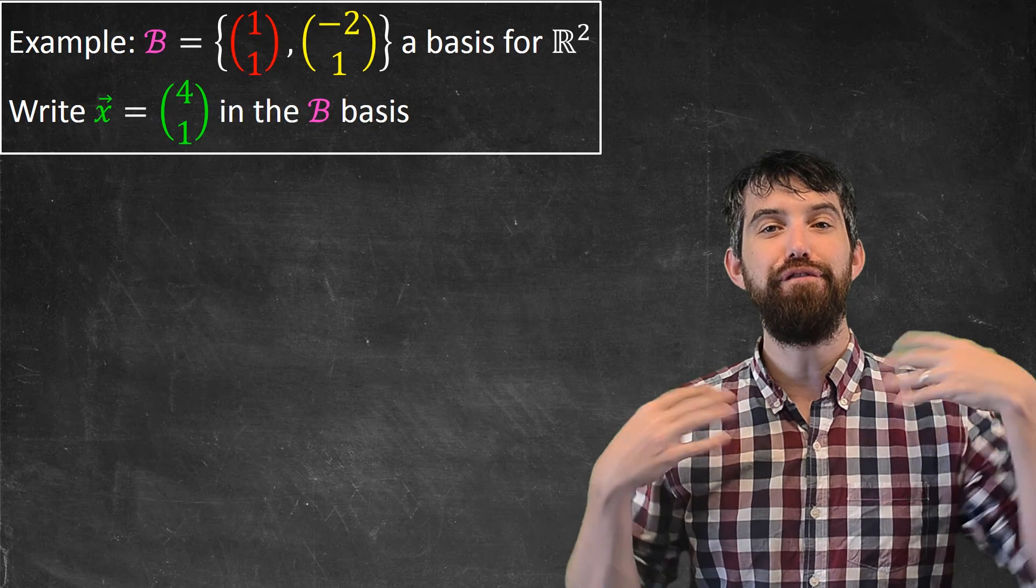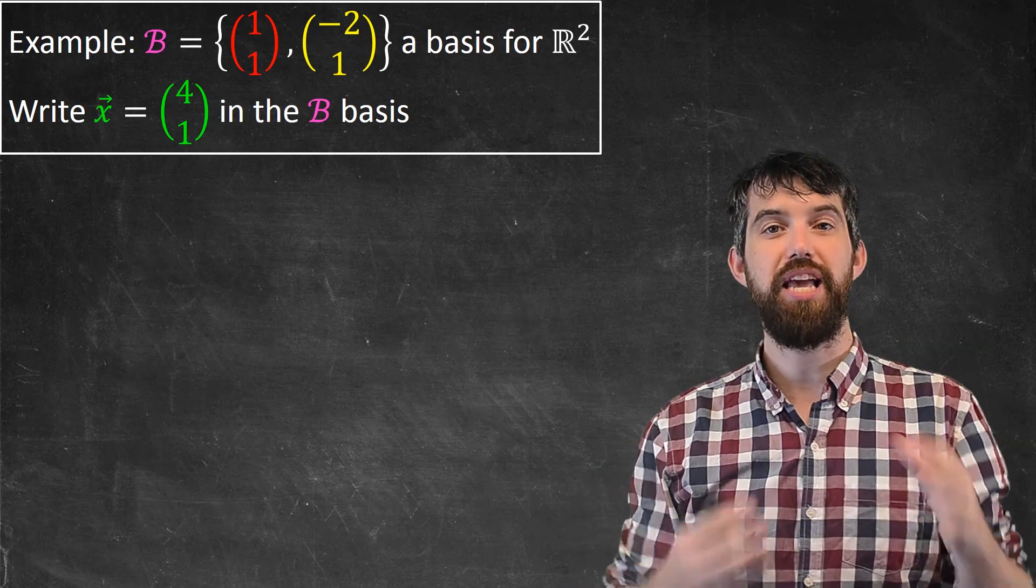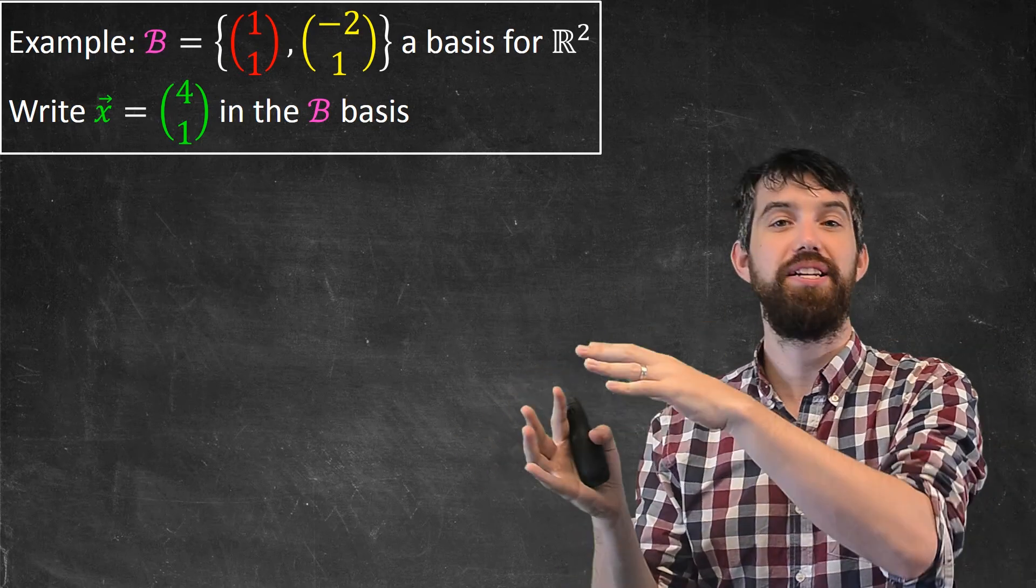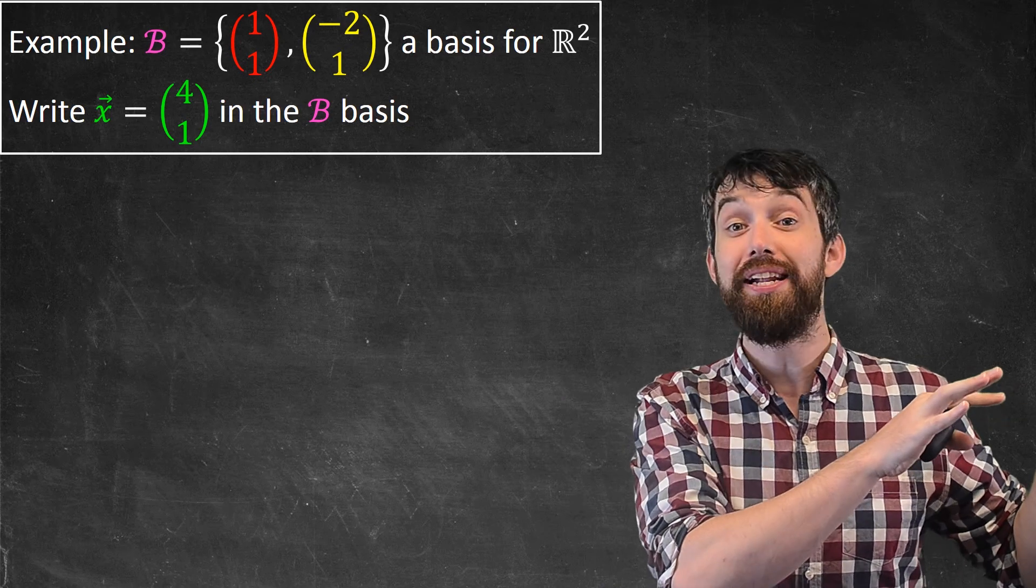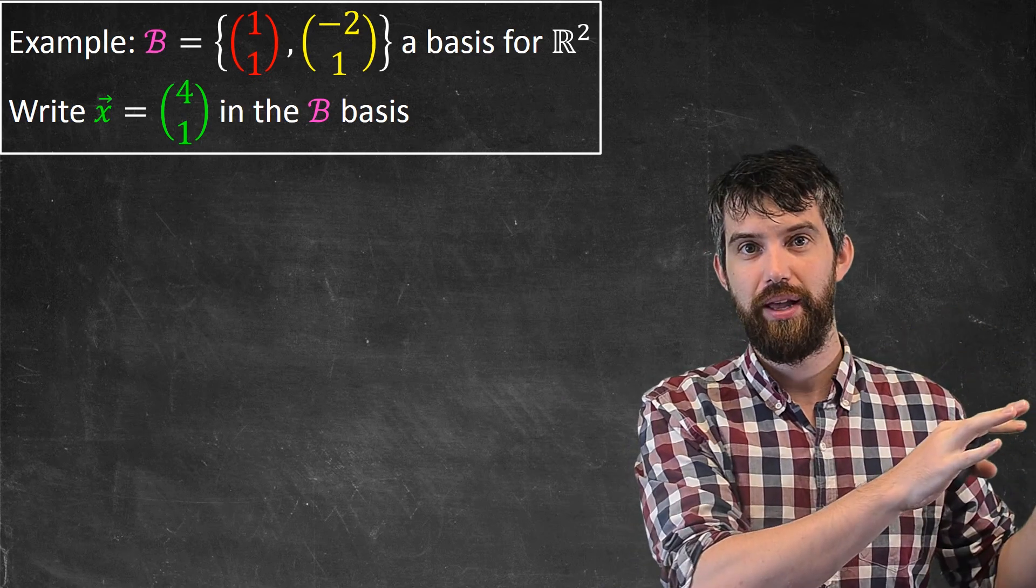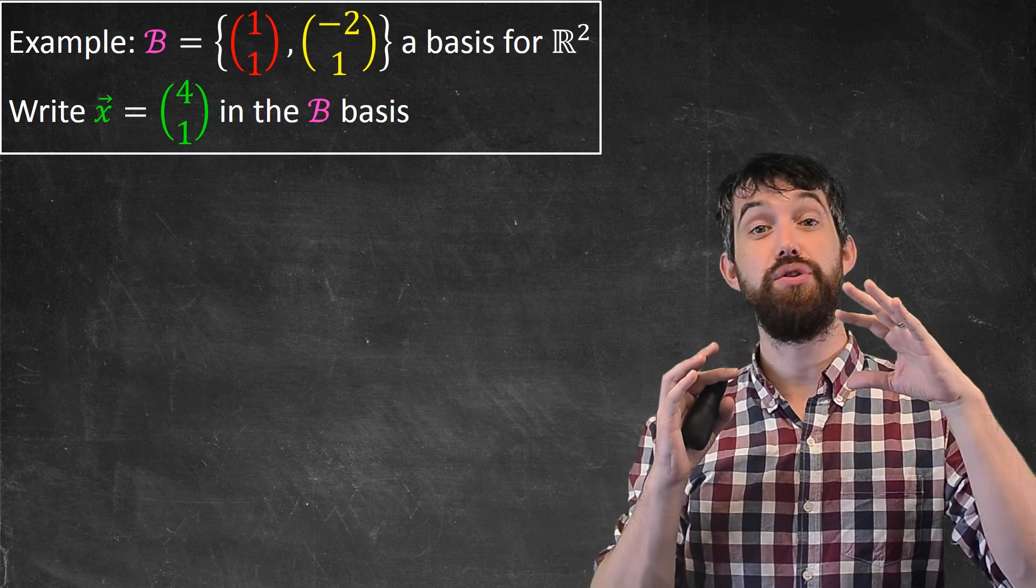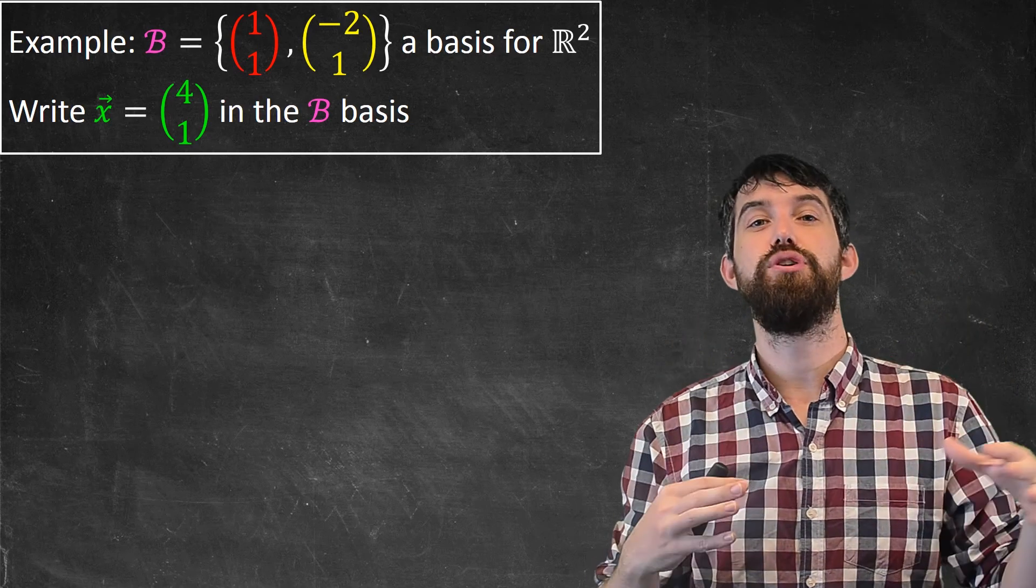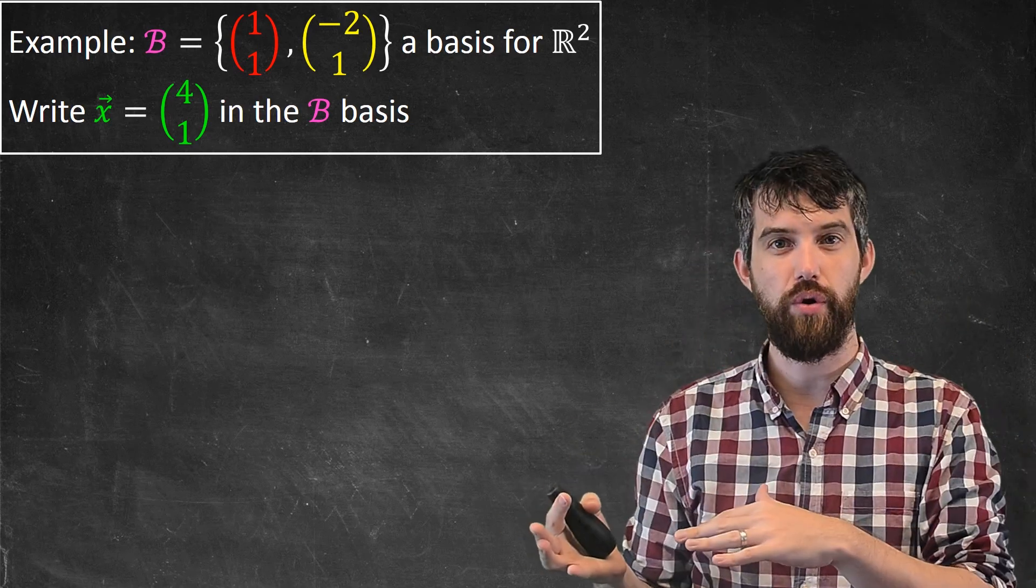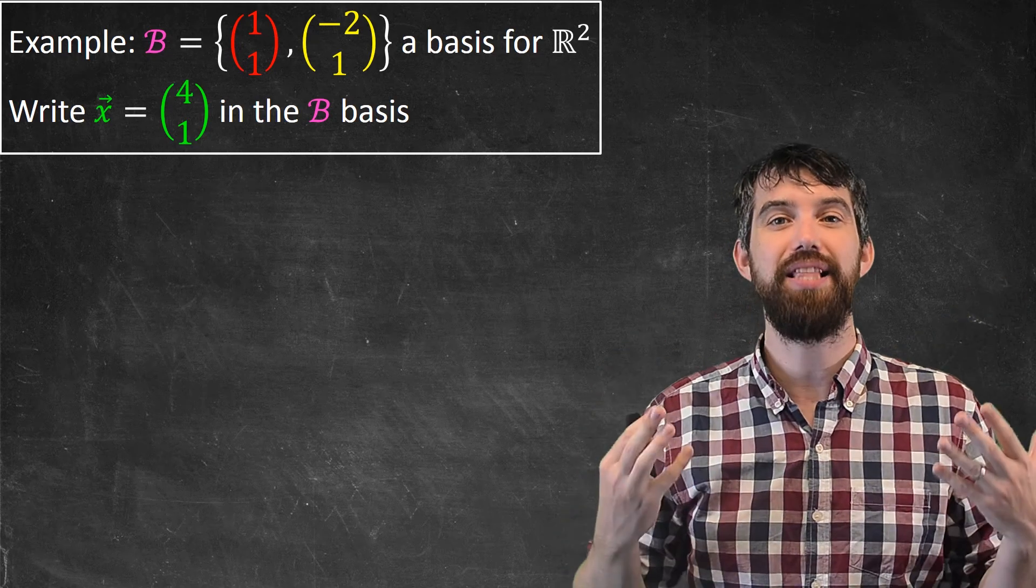In this video, I'm going to show you an effective method to be able to take one vector and write it in terms of some other basis, to write it in some other coordinate system. And while I show you the best way to do this kind of computation, I'm also going to introduce a little bit of notation that's going to help us going forward in the course. So the problem is this.